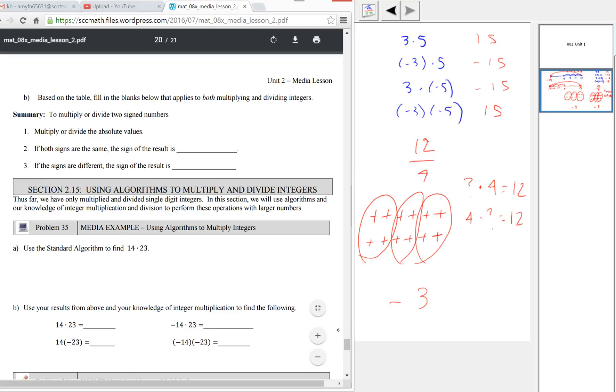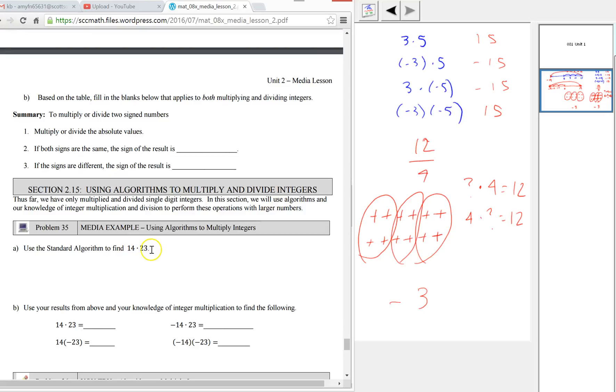Finally, we do the same thing with algorithms. We have numbers larger than single digits. Tell them to use a standard algorithm to find the general result. We want them to see that basically, anytime you're finding any of these products, regardless of sign, you're basically multiplying these numbers. Then the sign depends on the signs of the numbers you're multiplying. Whatever 14 times 23 is, positive, positive, negative, negative. Clumping them together like this, giving them the same numbers with all the different sign combinations helps them build patterns.